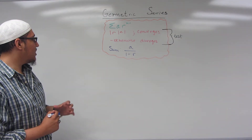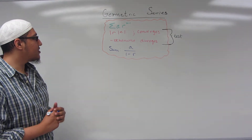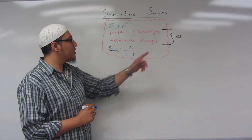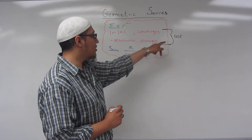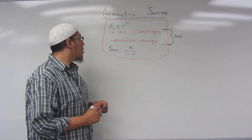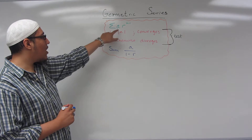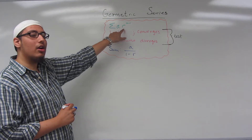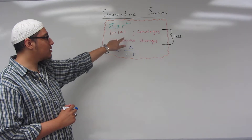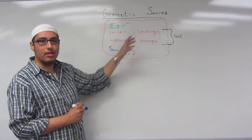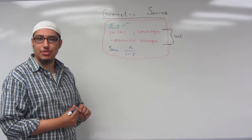To see if the geometric series converges or diverges, we use the geometric series test, which says that if the absolute value of R is less than 1, then our series converges; otherwise it diverges.